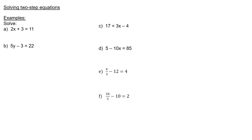Here are some examples of harder questions, or what we would call two-step equations. In question A, we have 2x plus 3 is equal to 11. I want to get x on its own, but the first thing I need to do is get 2x on its own. So I'm going to subtract 3 from both sides, which will leave me with 2x is equal to 8. I then divide both sides by 2, so x is equal to 8 divided by 2, which is 4.